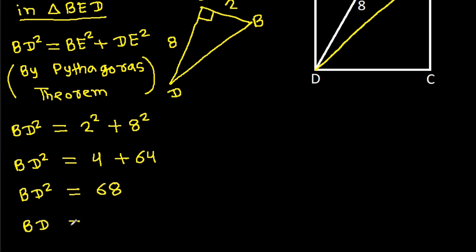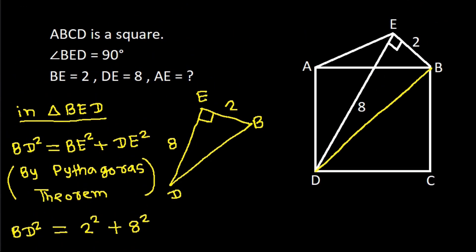So BD will be equal to the square root of 68.